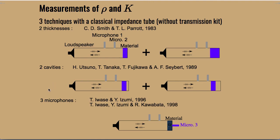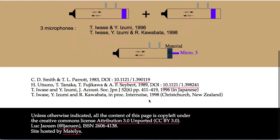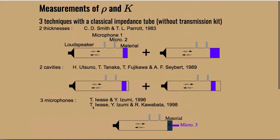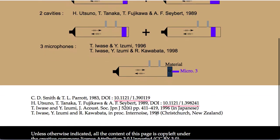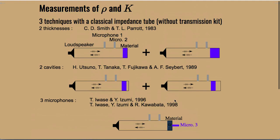The third method uses three microphones, or at least three microphone positions. It was introduced by Iwase and Izumi in 1986, though the original work is published in Japanese. An English translation and further refinements can be found in the work by Iwase, Izumi, and Kawabata published in the Proceedings of Internoise in 1988. In this approach, a third microphone position is placed behind the material sample, and from the frequency response functions of the three microphones you have access to Rho and K.